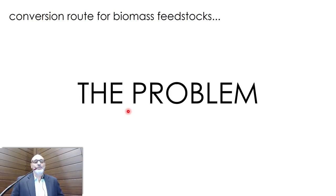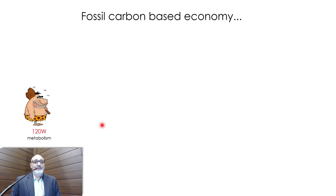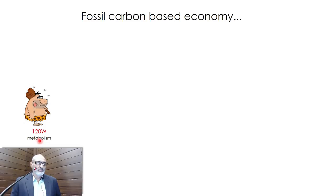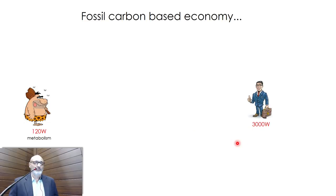Let me describe the problem. The problem is that renewables compete with fossil energies, both in economical and technical aspects, and this is related to our lifestyle. 15,000 years ago, we needed energy only for our metabolism — about 120 watts, equivalent to three or four lamps. Today, an average citizen consumes 3,000 watts — more than 20 times more — while our metabolism is the same. The difference is entirely related to our lifestyle.